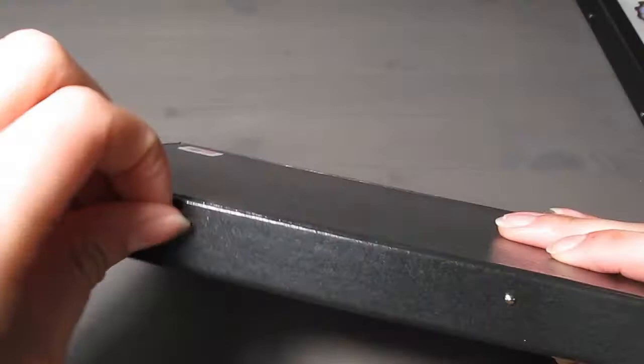To start we'll need to remove the face of the frame by pulling out the nails on the side of the frame. Put these nails to the side because we'll need them later to close the frame back up.